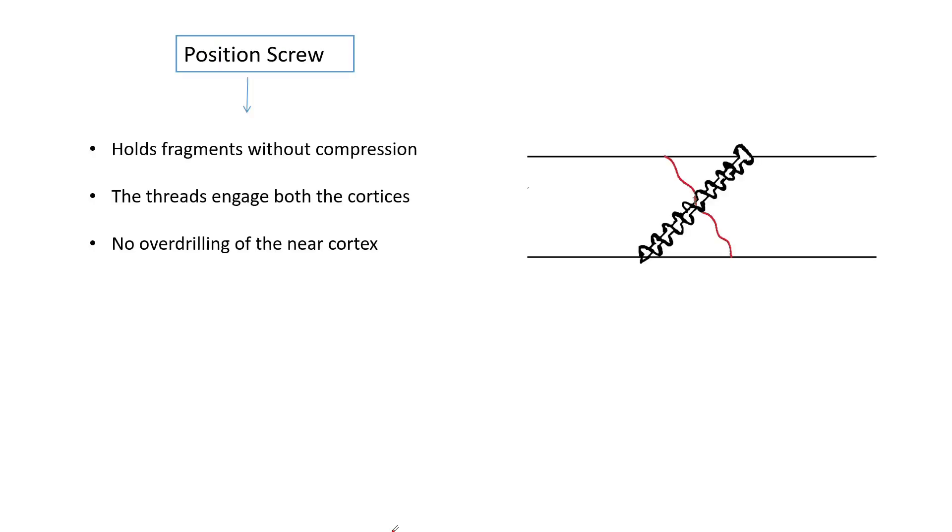Position Screw. A position screw is a screw which holds fragments without compression. The threads here engage both the cortices unlike the lag screw. So no over-drilling of the near cortex is done in this technique.